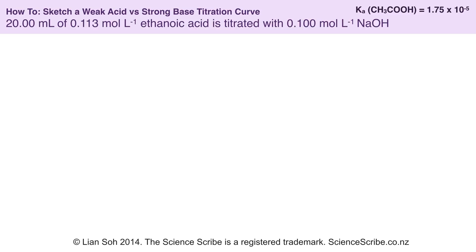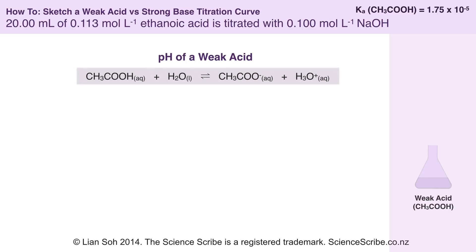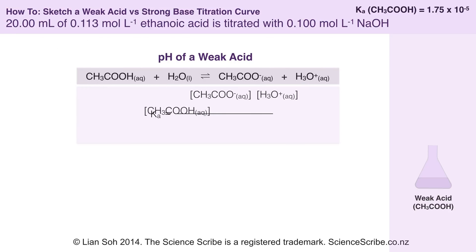Let's suppose we're titrating ethanoic acid and sodium hydroxide. At the start of the titration, I'm going to fill my flask with a weak acid of ethanoic acid. At the very beginning, no sodium hydroxide has been added, so to calculate the pH at the first point of the titration curve, it's just trying to find the pH of a weak acid. We start with an equation in water, and we go for our Ka expression.